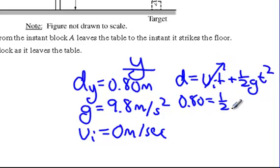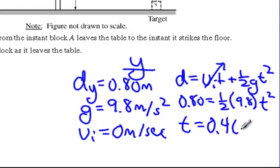We know it's 1/2, we know gravity is 9.8, and we have time squared. When we work that out on our calculator, we end up solving for time, and time ends up being 0.40 seconds.